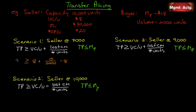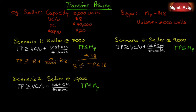So the transfer price must be greater than or equal to $8 from the seller's perspective. From the buyer's perspective, the transfer price must be less than or equal to the market price they're already paying, so it must be less than or equal to $18. What we have is a condition where the transfer price must be less than or equal to $18 but greater than or equal to $8 — so a deal can be made.